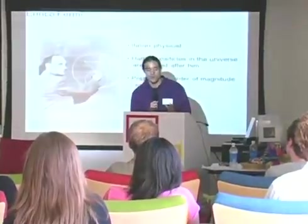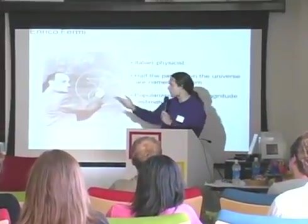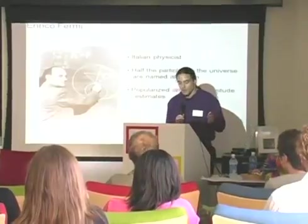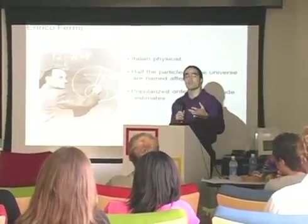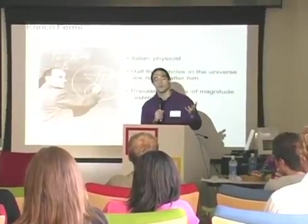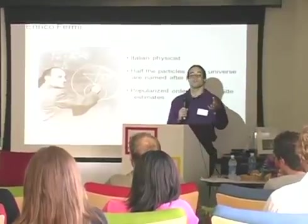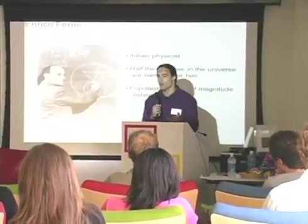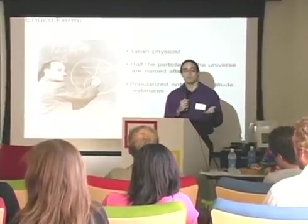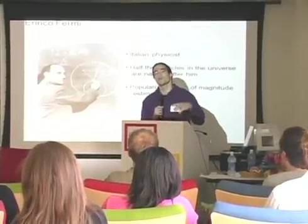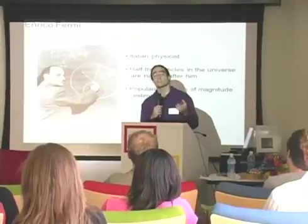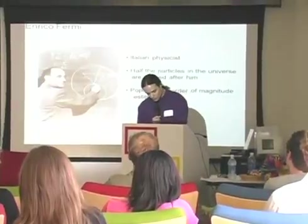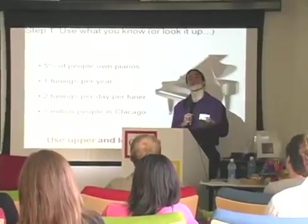I want to talk about how you would go about calculating something like the Spider-Man problem. One method is called the Fermi approximation. Enrico Fermi was an Italian physicist — and a little bit of trivia: half the particles in the universe were named after him. He popularized this method of computing things within an order of magnitude. He would go up to his students and say, 'Tell me the number of piano tuners in Chicago.' Of course, his students had no idea how to do that. But he showed that through very simple approximations, you can calculate this and just about anything else, just by starting with what you know and using very simple math to do order-of-magnitude estimates.